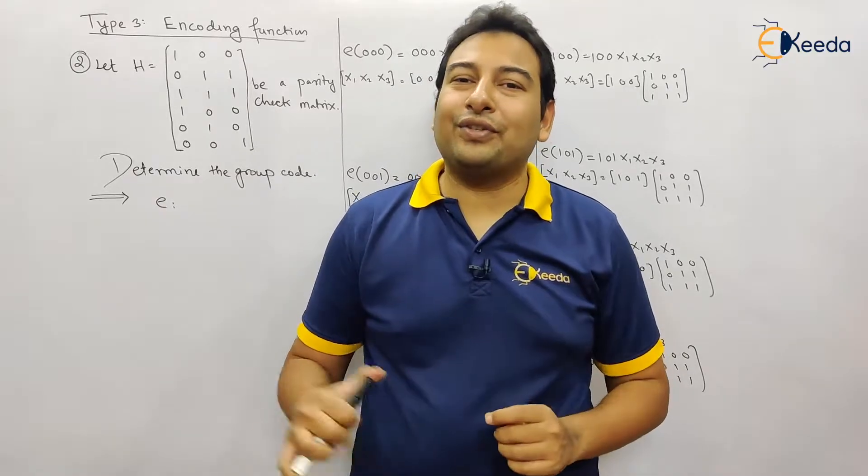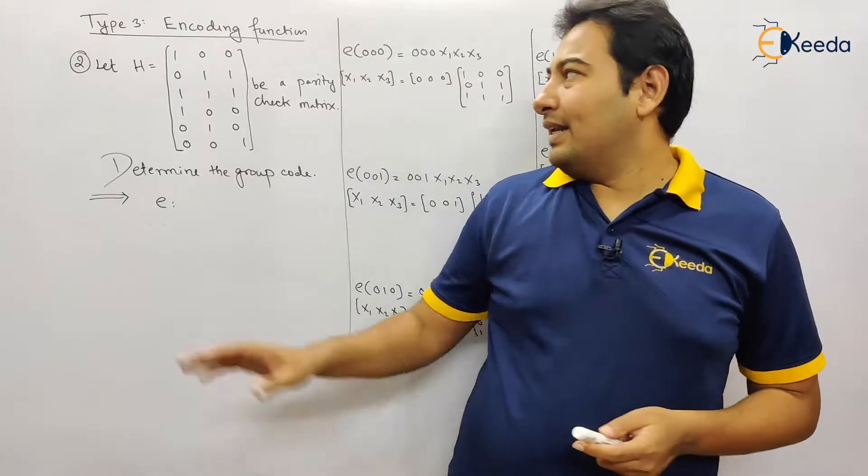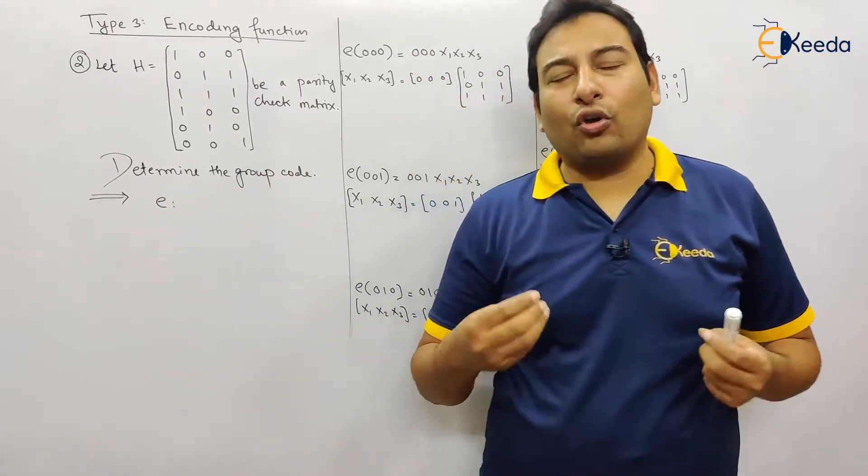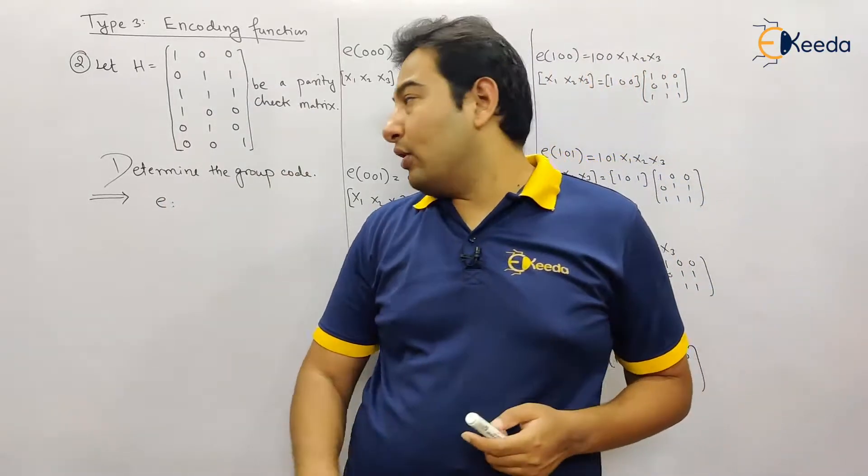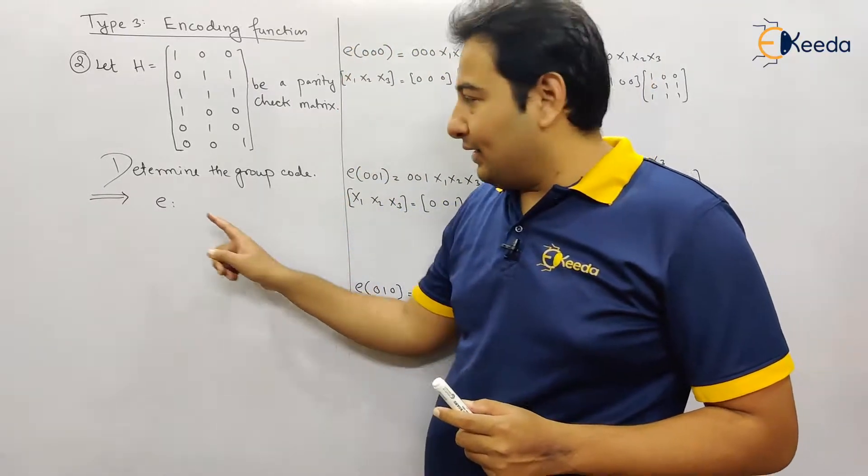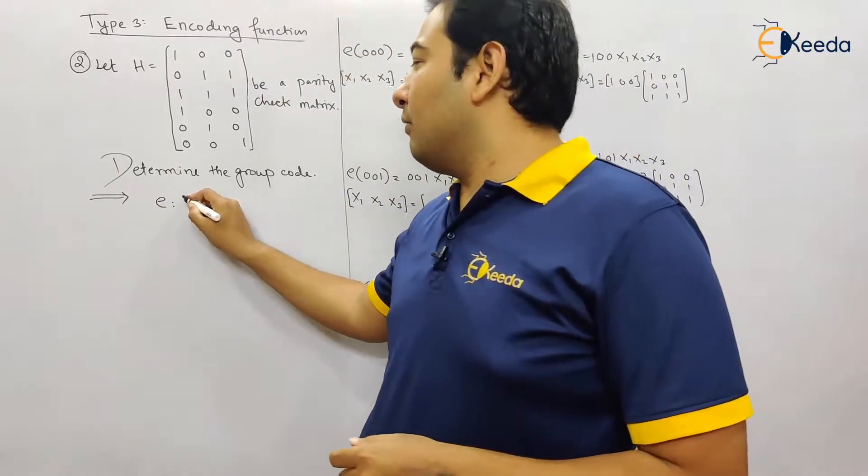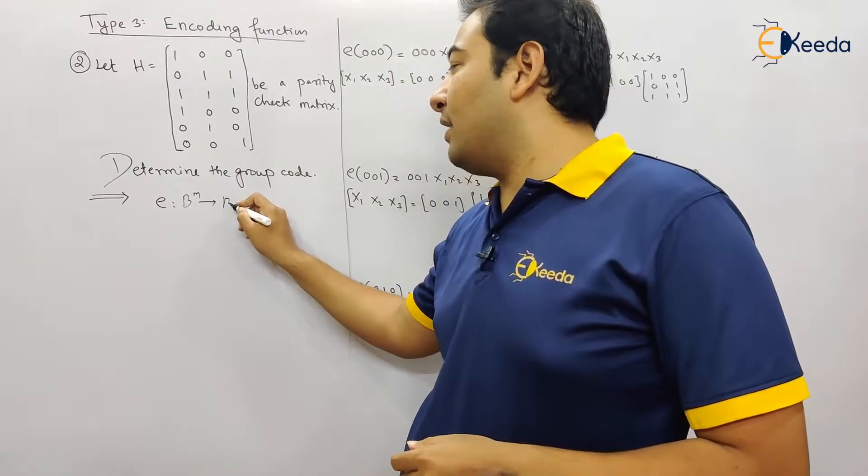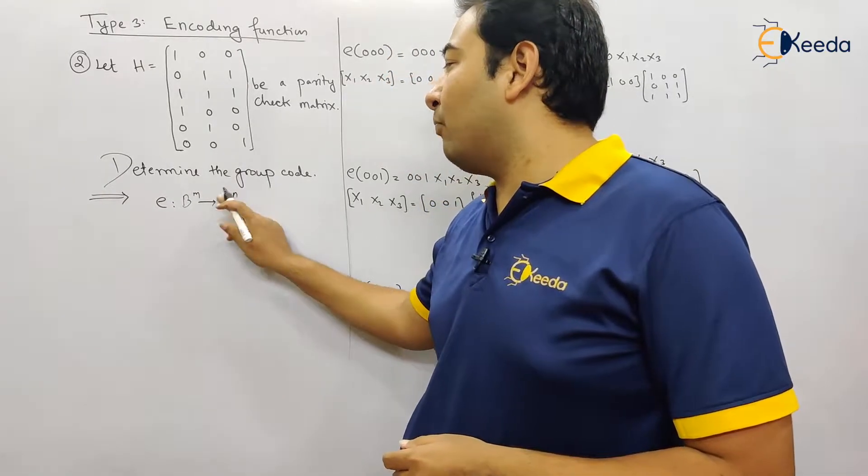Welcome back friends, let us discuss problem number two. Here H is given to us and we need to determine the group code, or basically we need to find out the encoding function. First of all, let us check what the function is given, that means in terms of b raised to m tends to b raised to n, because m and n are very important.